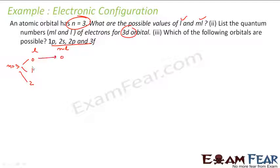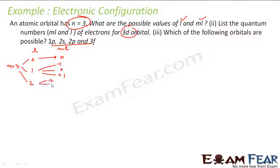For L equal to 1, ML can be minus 1, 0, and plus 1. For L equal to 2, ML can be minus 2, minus 1, 0, plus 1, and plus 2. So these are the possible values.